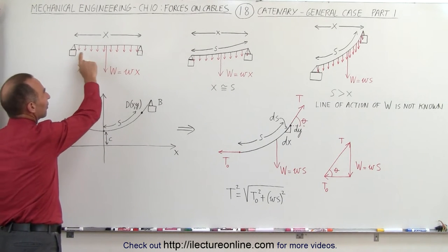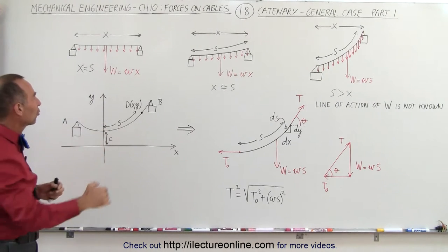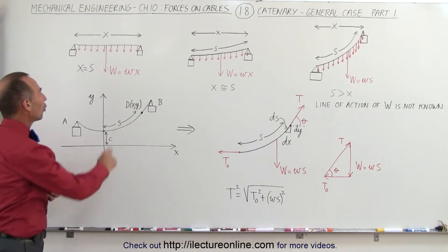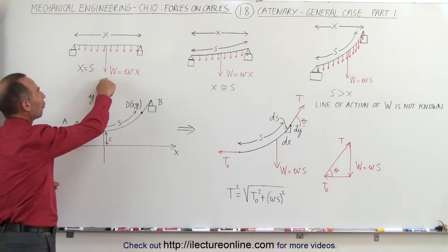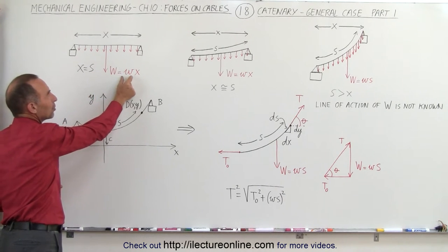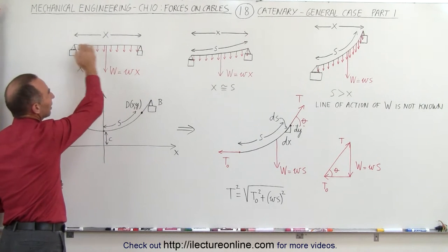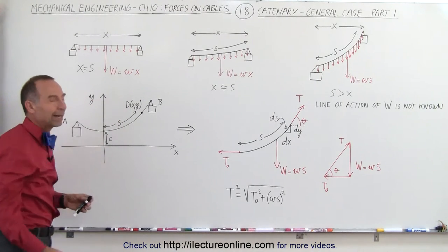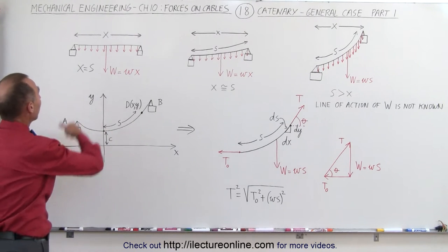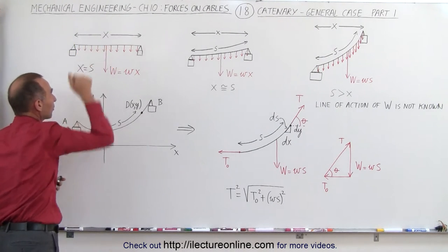Normally if you have a very light string, you can pretty well tie it up in such a way that the cable is virtually straight. The total force pushing down due to gravity will simply be the weight per unit length times the length of the cable, denoted by x, and this would be a uniform load — the force is uniformly distributed across the cable.